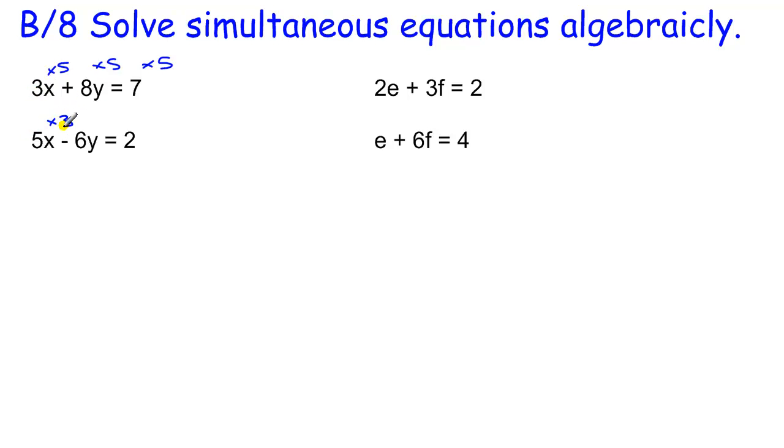The way I am going to do that is I am going to use the number in front of this x to times this equation, everything in that equation, and I am going to use the number in front of this x, which is 5, to times this equation.